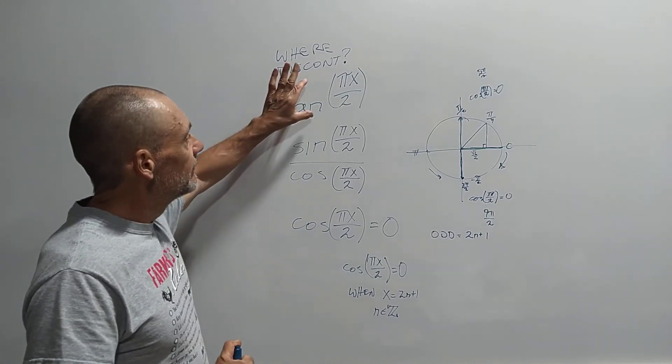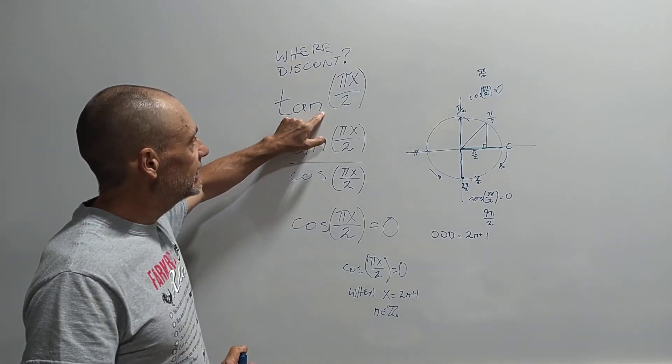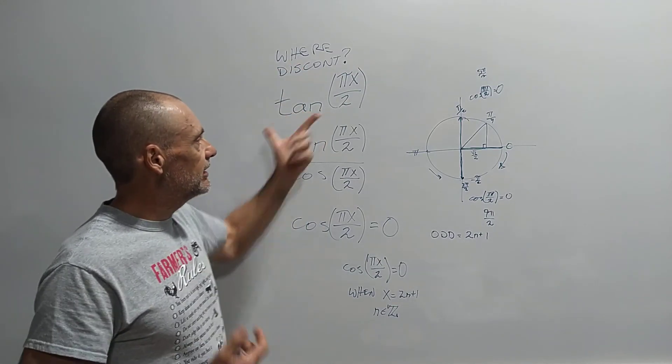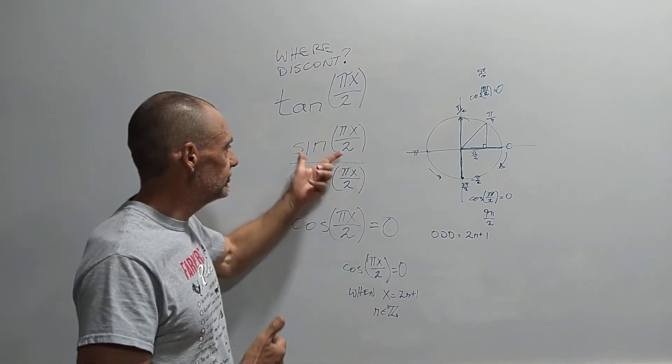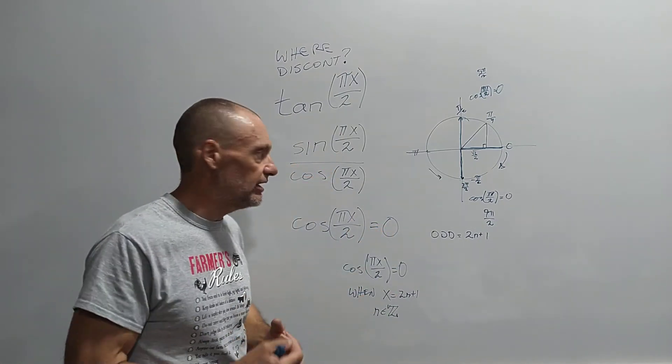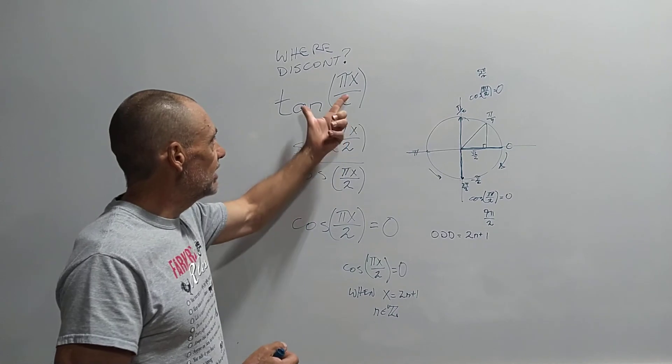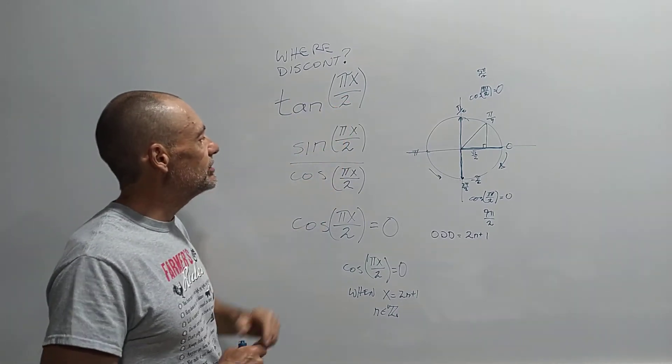So basically what we're doing here is let's take the tangent and one of our go-to ways of dealing with tangents is to write it as sine over cosine. It's the definition of tangent, sine over cosine. So it's sine of this over cosine of this. Where is it discontinuous?